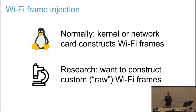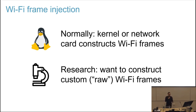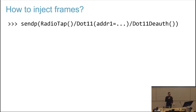You might think, what could possibly go wrong? I thought that myself a few years ago, but there are surprisingly many things that actually can go wrong in practice. So maybe a quick introduction: how can you inject a Wi-Fi frame in Linux? You can, for example, use Python with the Scapy library.